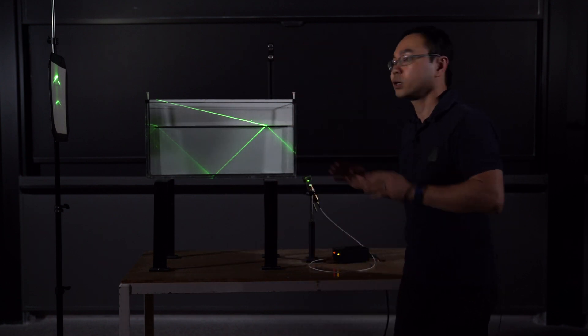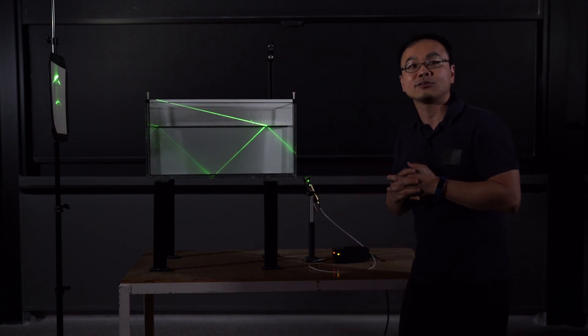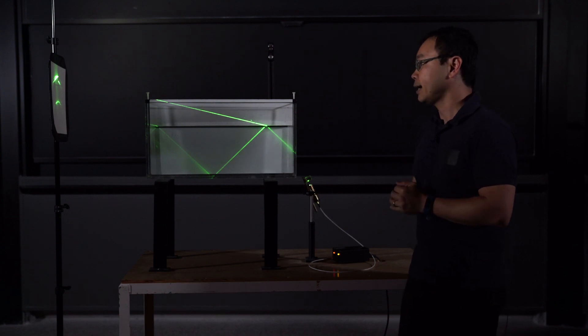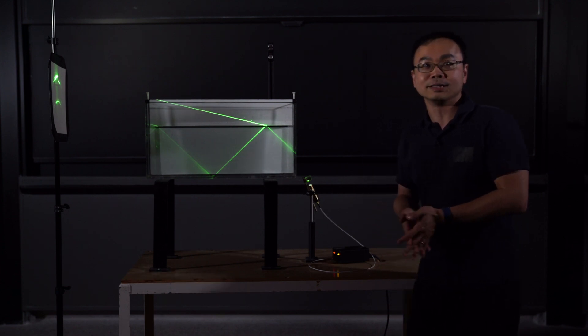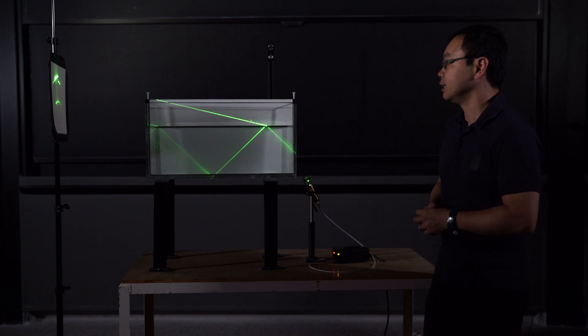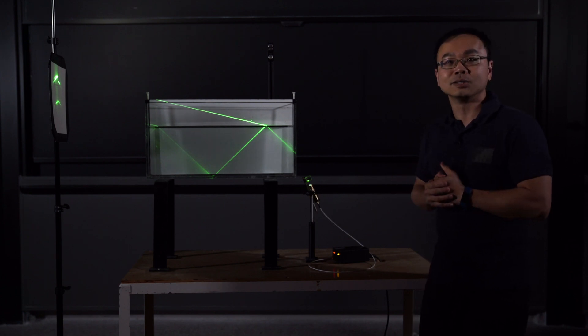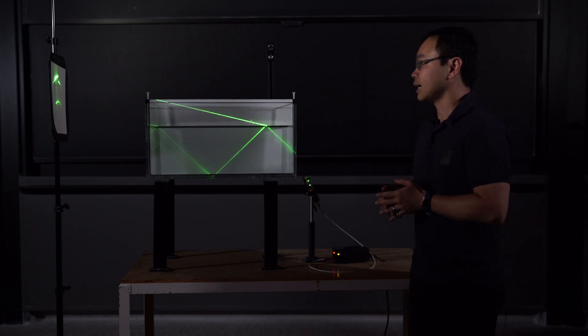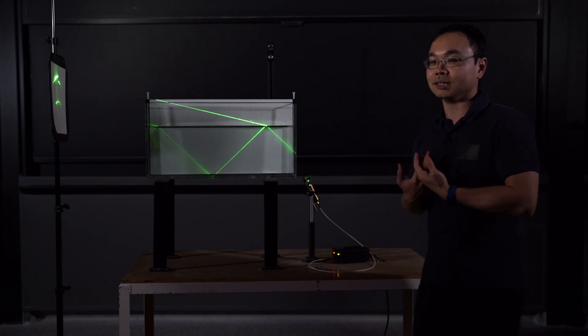You can see the line is slightly distorted. That is actually because of the imperfection of the edge of the tank. But that doesn't defeat the purpose. Because you can see, nature really follows what we have discussed using Snell's law.